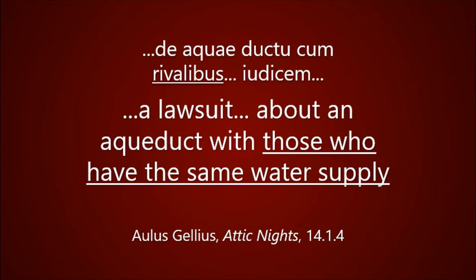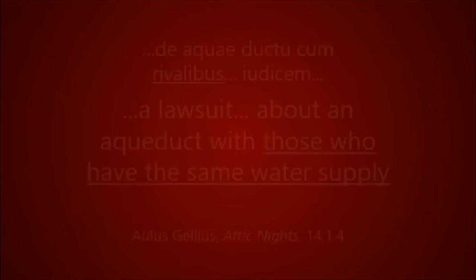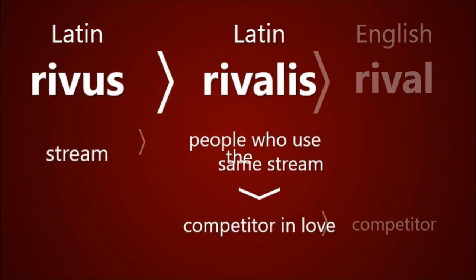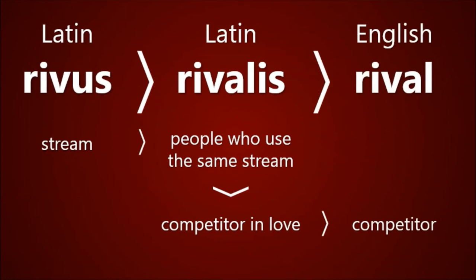It was this meaning that was then extended metaphorically to become competitor in love. When people compete over the same water supply, or over the same person, it can cause deep rivalries, and that's why the word rival developed from a word meaning stream.